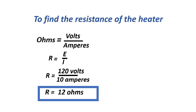To find the resistance of the heater: ohms equals voltage over amperes, or R equals E over I, equals 120 volts over 10 amperes. Our resistance is 12 ohms.